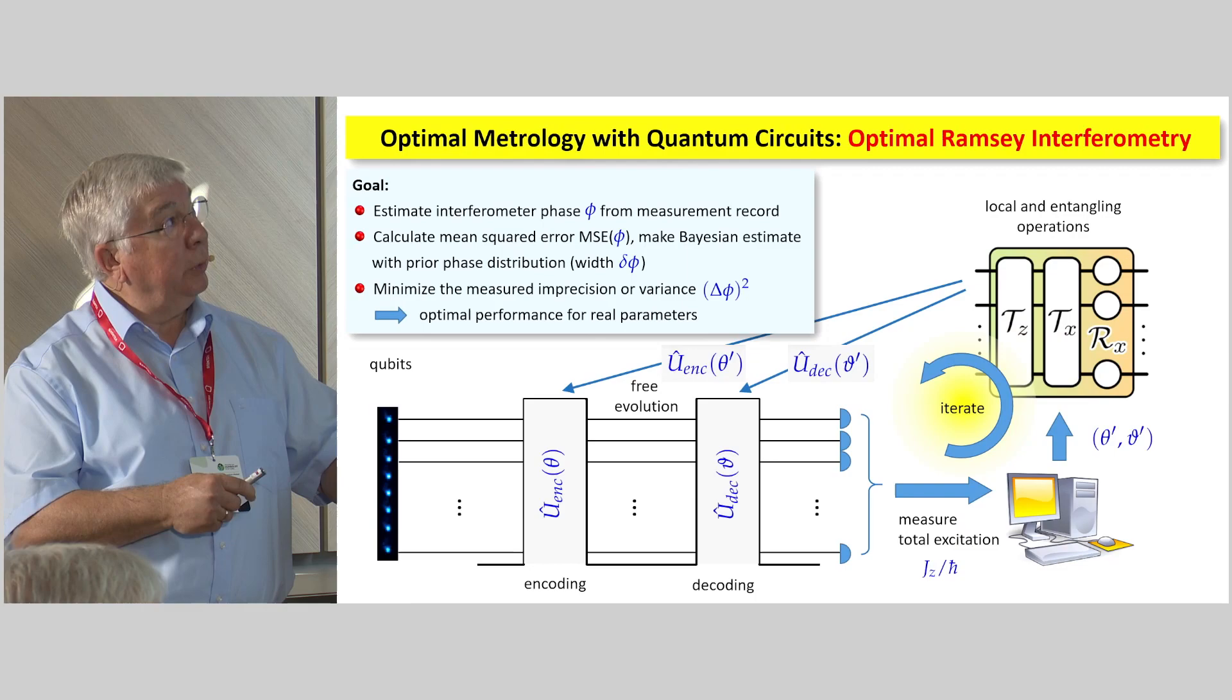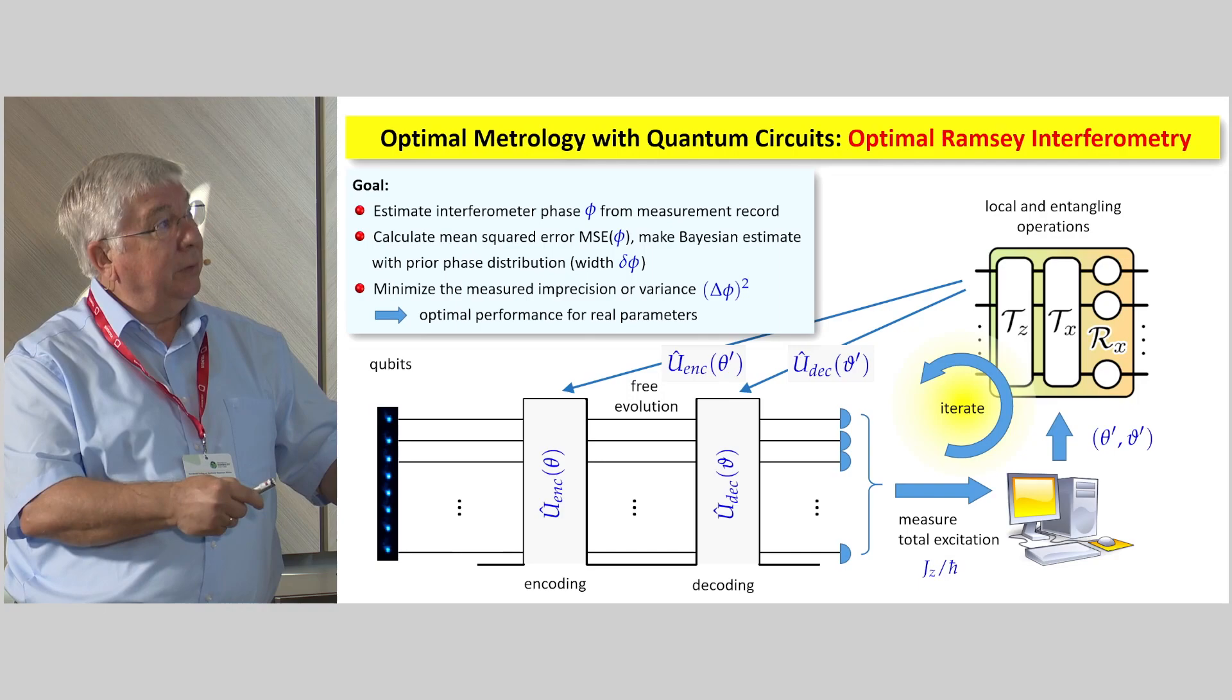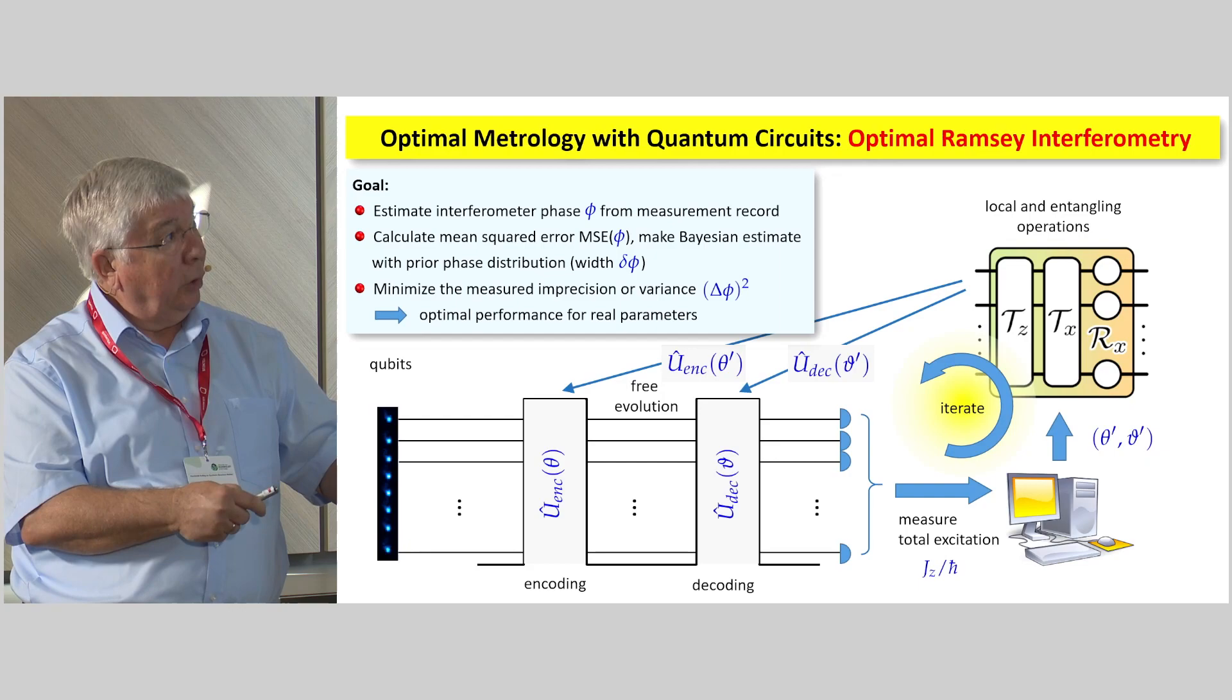Of course, what we are looking for, we want to estimate the interferometer phase from the measurement record. We have a Bayesian estimate. And I have another five minutes. Is that okay? Thank you. Then the prior phase, the phase distribution. And, of course, we minimize now the variance and optimize the performance for real parameters.